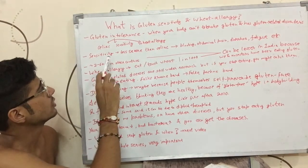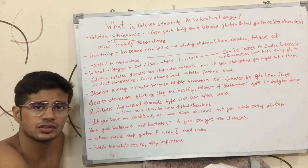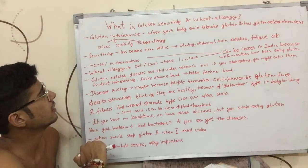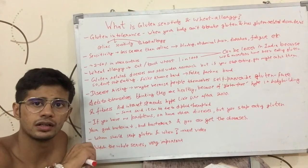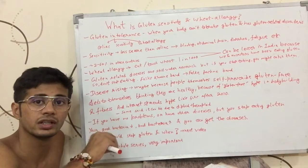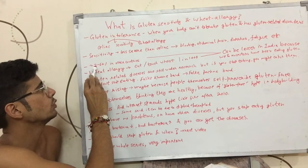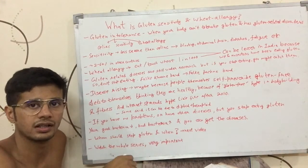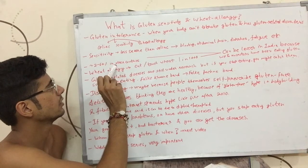One in a thousand people has been found to have wheat allergy, while 2 to 6 or more than 6 people out of 100 have been found to have gluten sensitivity — so approximately 2 or more people, up to 6 or more out of 100, are sensitive to gluten and will face problems if given gluten.